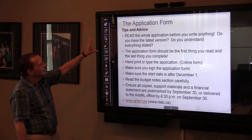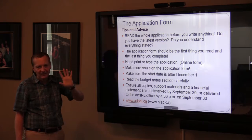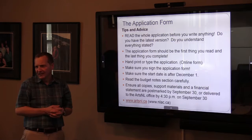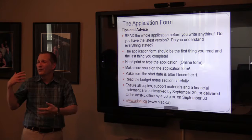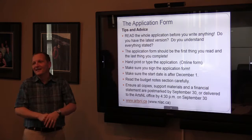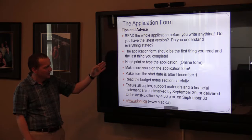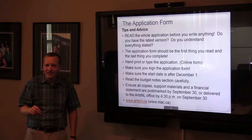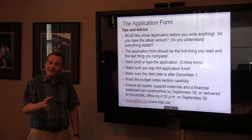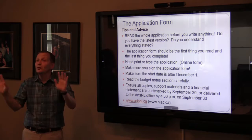When completing the application form, first read the whole thing before writing anything — go through the whole document and make sure you understand everything requested. If you don't understand something, send me an email or give me a call. The application form should be the first thing you read and the last thing you complete. Make sure it's signed. In this program, only one person has to sign as a representative of the organization. Make sure the start date is after December 1st, and read the budget notes section carefully. Ensure all copies, support materials, and the financial statement are postmarked by September 30th or delivered to the ArtsNL office by 4:30 PM.